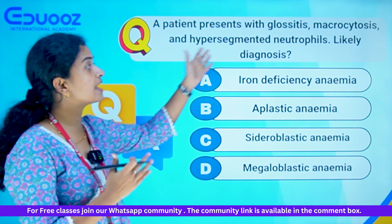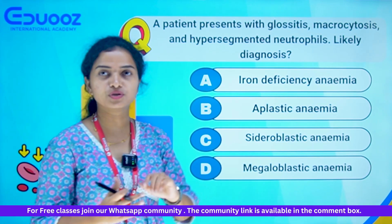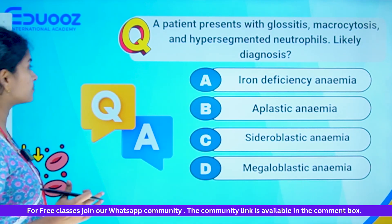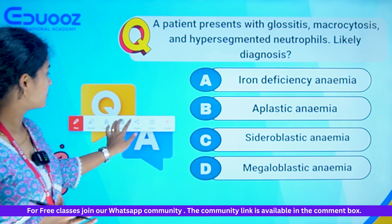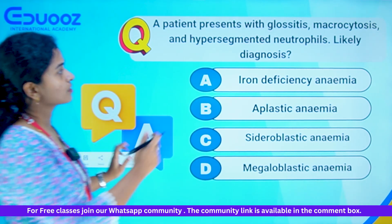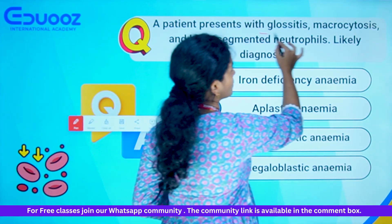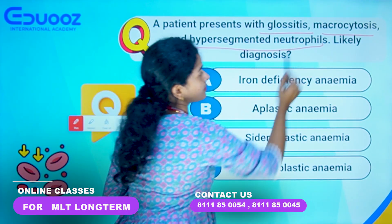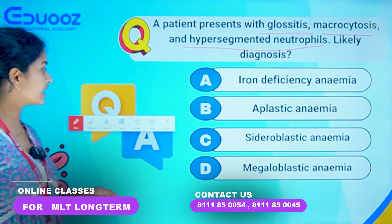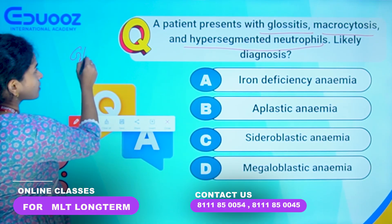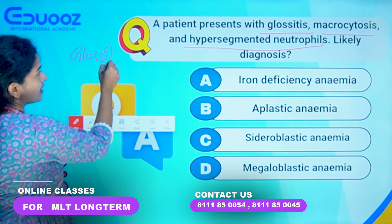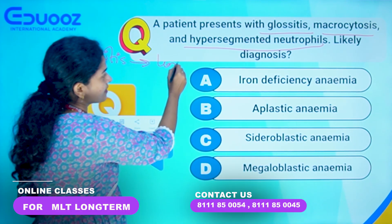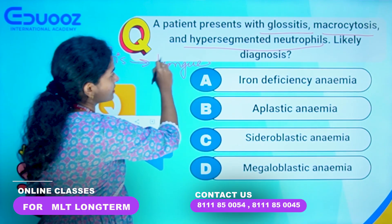Next question: A patient presents with glossitis, macrocytosis, and hypersegmented neutrophils. There are three characteristic features. Glossitis means tongue inflammation, macrocytosis means the cells are very big, and hypersegmented neutrophils are the third feature.